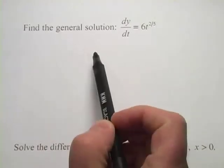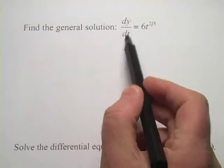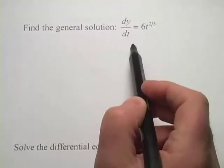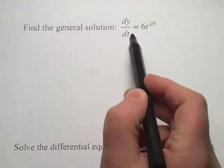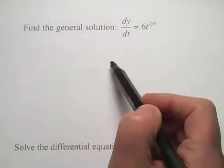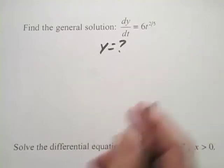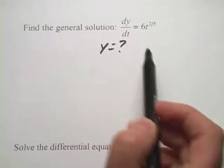When it says find the general solution, and then we're given dy/dt equals 6t to the two-fifths, this is the derivative already, this is the derivative of some other function of y. So the question is, what is y? So what was y before we took the derivative?